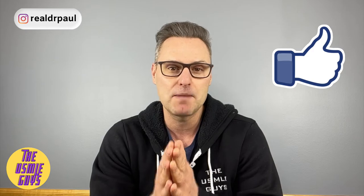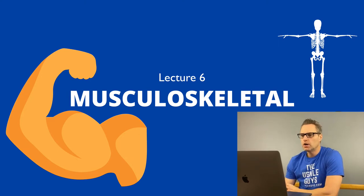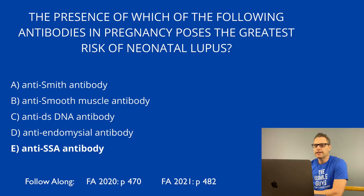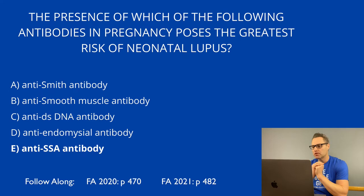All right, let's not waste any more time. Let's dive in with today's episode. The correct answer here is E. So let's talk about lupus, which is a systemic remitting and relapsing autoimmune disease that causes organ damage as a result of mainly type 3 hypersensitivity reactions.